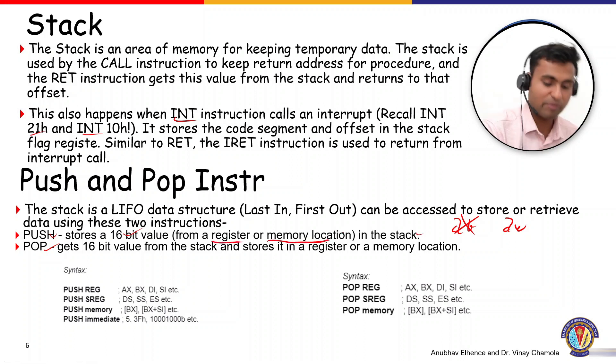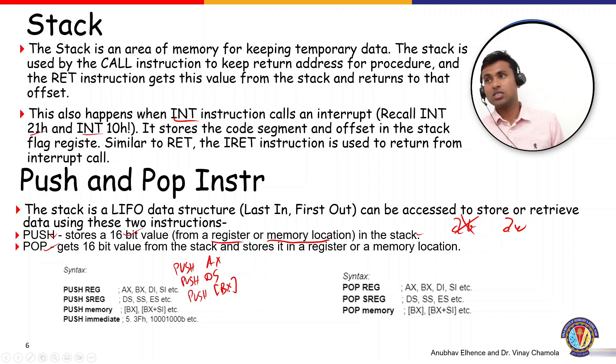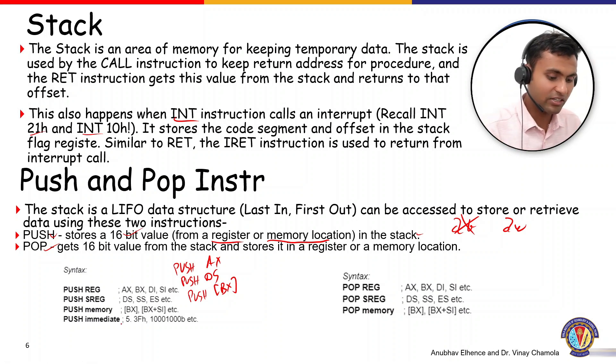Directly you can push the memory location as well. If you are pushing a register, you can do an operation like push AX. If you're pushing some segment value, then you can do push DS. If you're pushing memory, then you can directly use an operation like push BX. That would store the content which is stored at this memory location into the stack. You can obviously push immediate data also into the stack.